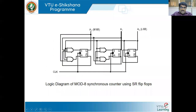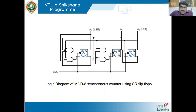Once I have all the expressions, I take three flip-flops: A2, A1, and A0. This is SA0 and RA0 — whatever expression you got for SA0 and RA0, connect it there. Similarly apply combination logic for SA1, RA1 and SA2, RA2. This gives the logic diagram of the mod 8 synchronous counter using SR flip-flops.